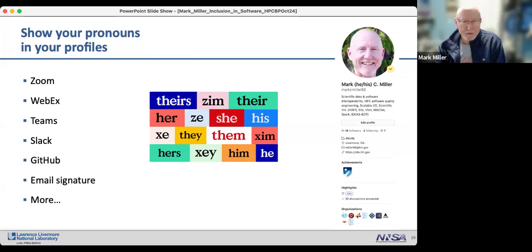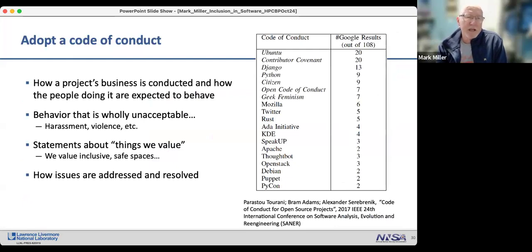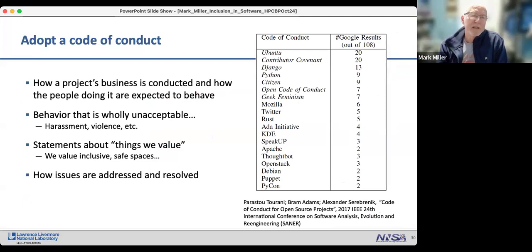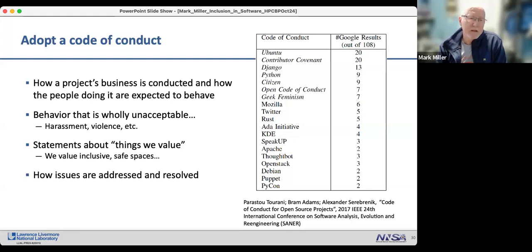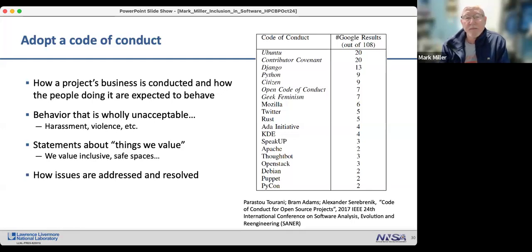Adopt a code of conduct. There are many in use — for example, Contributor Covenant is quite popular. A code of conduct describes how people are expected to behave on the software project, identifies wholly unacceptable behaviors like harassment and violence, includes statements about values like inclusion and safe spaces, and describes how issues are addressed when encountered. There are many pre-written codes of conduct that you can find and adapt for your project's needs.